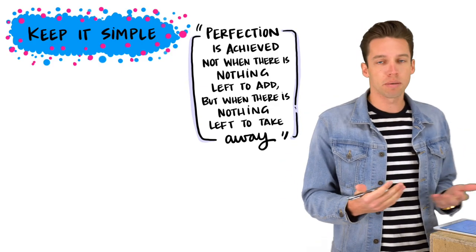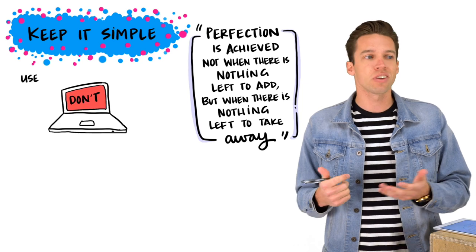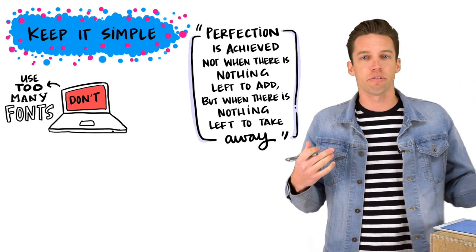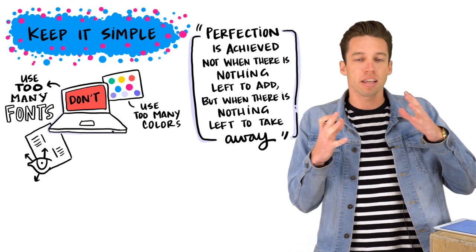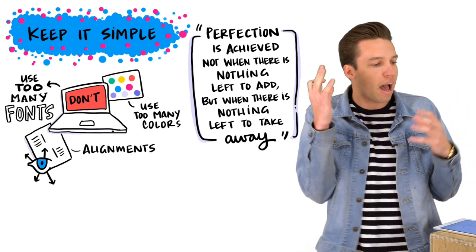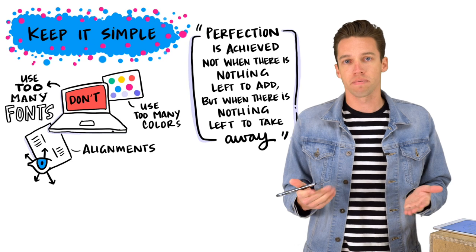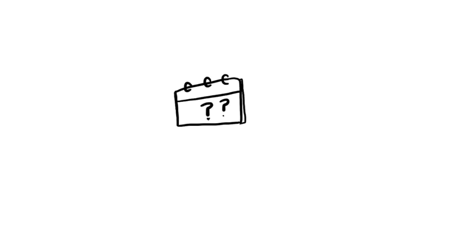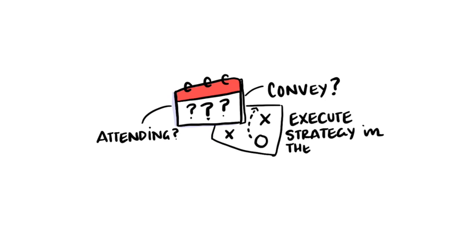The same notion can be applied to web design. When you're designing your event pages, don't be including 10 different fonts or 30 different colors. Don't have things left-aligned and right-aligned so the eye is just wandering around the page. Get to the point. Think about your event, everything you need to convey, and then execute your strategy in the most simple way.